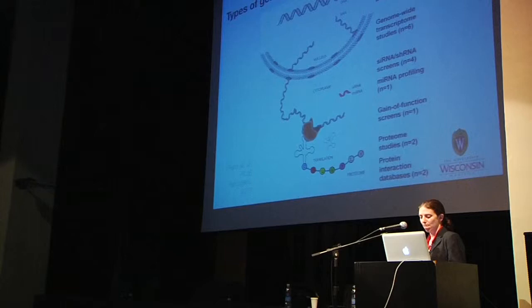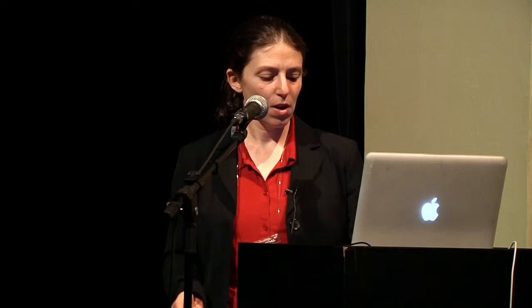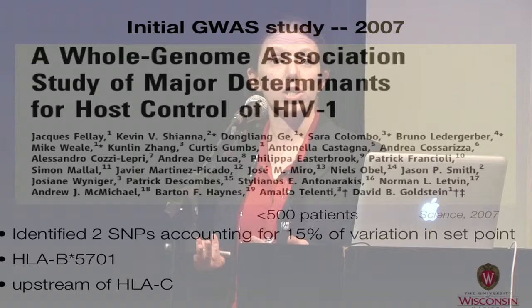There are a number of different phenotypes studied in these experiments: HIV resistance or acquisition, HIV viral load set point — comparing low versus high set points — intracellular HIV DNA, elite controller status, HIV disease progression using CD4 T cell decreases, time to AIDS, rapid progression, and non-progression. The ultimate goal, no matter how you categorize patients, is to identify important genes that are linked to control of HIV.